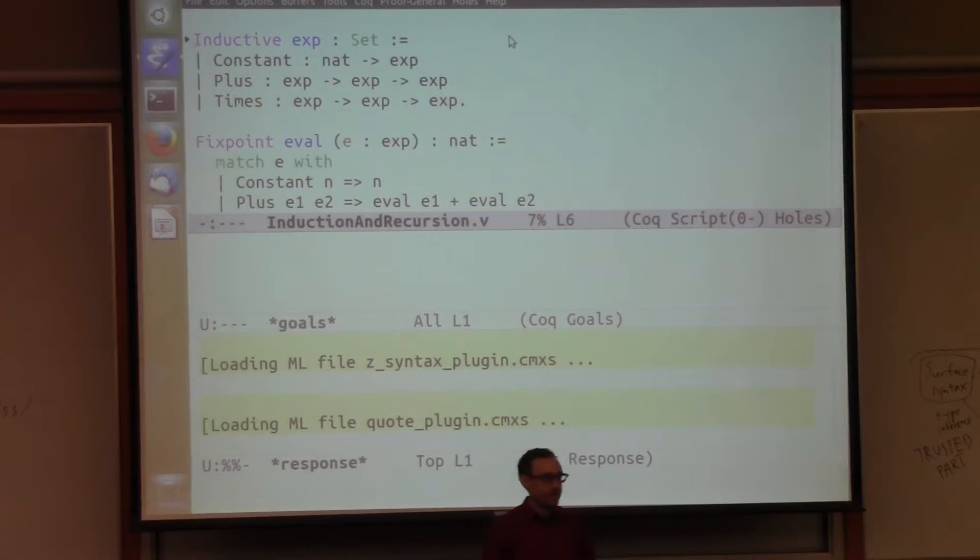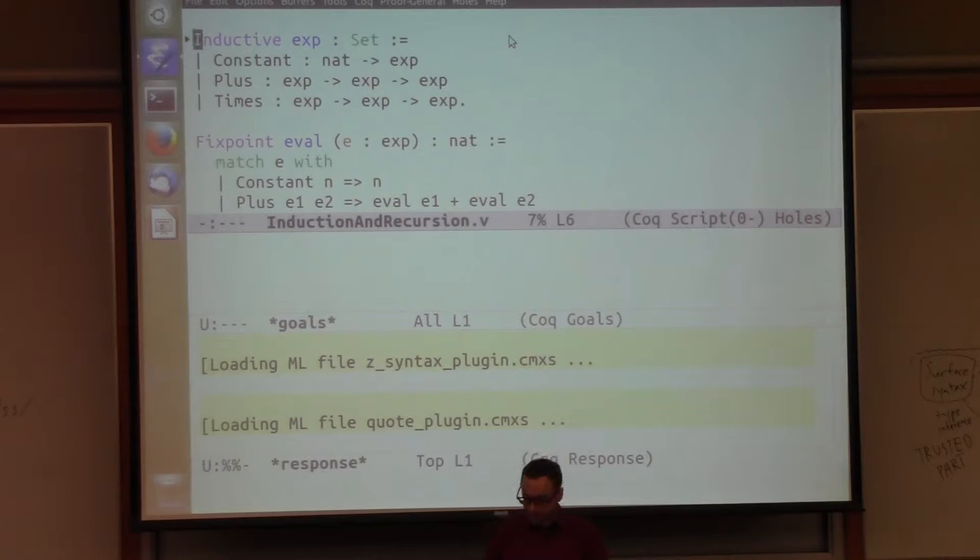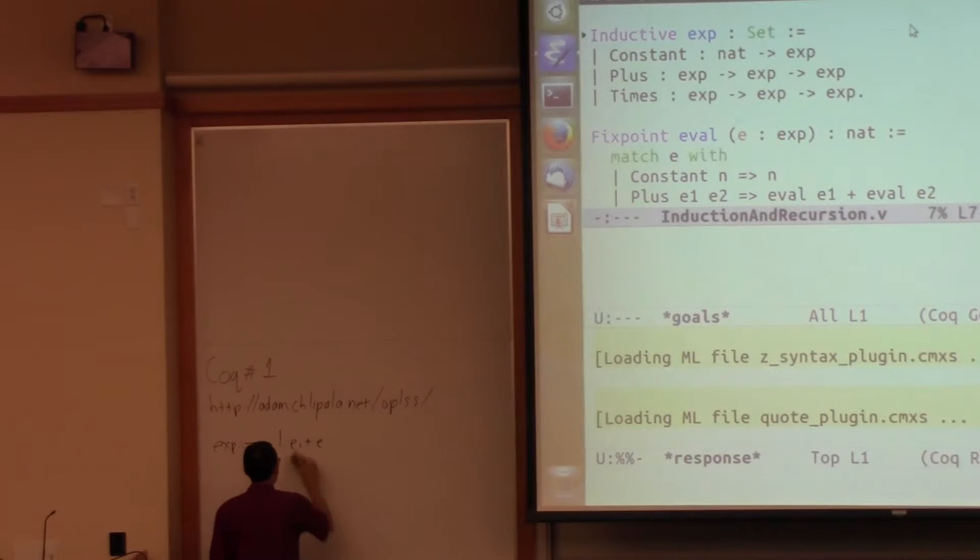We can proceed very incrementally here and here's an example of a comment. Coq is happy with the comment it's a good start. So here's an example of an inductive type definition which corresponds to an algebraic data type definition in say ML or Haskell. We're saying I'm introducing a new type called exp or exp for expression and it's a set. Here set means the same thing it's meant in several contexts in other lectures and there are three constructors for building expressions. We have one called constant that takes a natural number written as nat and produces an expression.